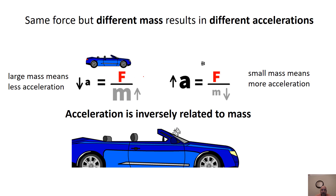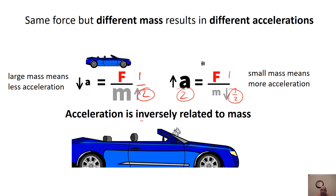You can see this by plugging in numbers. Say the force is 1 (same for both, per Newton's third law). If the mass is 2, the acceleration is 1/2. If the mass is 0.5, the acceleration is 1/0.5 = 2. So a smaller mass gives a larger acceleration, and a larger mass gives a smaller acceleration — that's the inverse relationship between mass and acceleration.